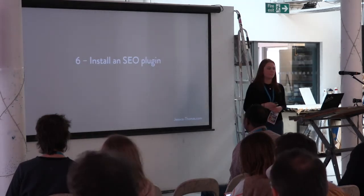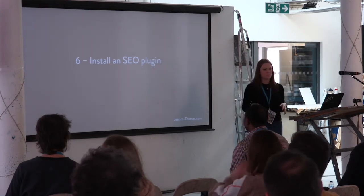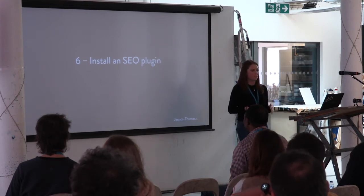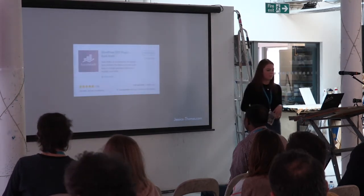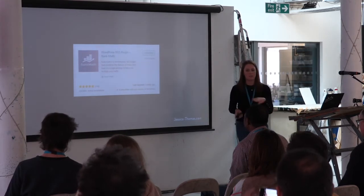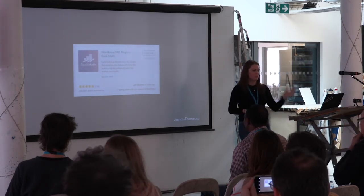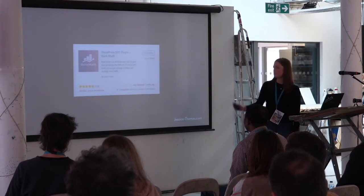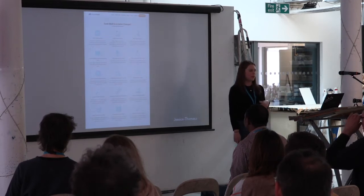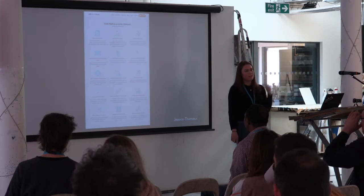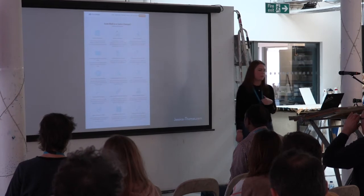Step six is to install an SEO plugin. Having an SEO plugin is a really simple way of ensuring all of your pages are optimised for the keywords you want to rank for. My personal favourite is one called RankMath — it's got some really cool features, it's completely free, and it has some features only available in the premium version of Yoast. I know a lot of people really like Yoast, but RankMath is my favourite. If you're currently using Yoast and want to switch to RankMath, it has a really easy one-click import feature, so you can transfer all your data over really easily.